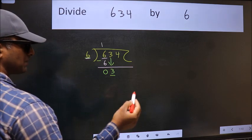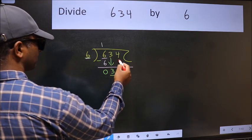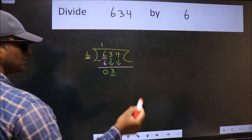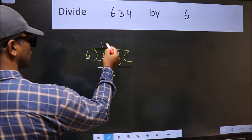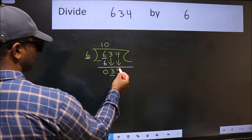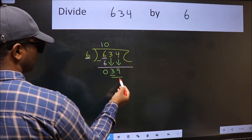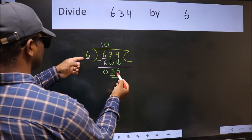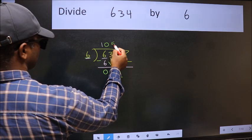So we should bring down the second number. And the rule to bring down the second number is we should put 0 here. Then only we can bring this number down. Now 34. A number close to 34 in the 6 table is 6 times 5 is 30.